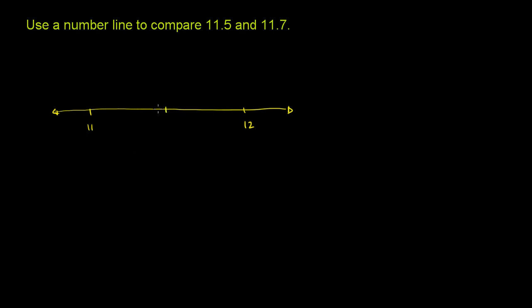So that would be 11 and 5 tenths, or that would be 11.5. Well, I've already done the first part. I've figured out where 11.5 is. It's smack dab in between 11 and 12. It's 11 and 5 tenths. But let me find everything else. Let me mark everything else on this number line.